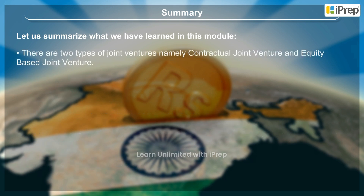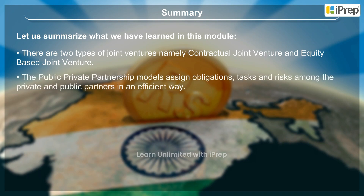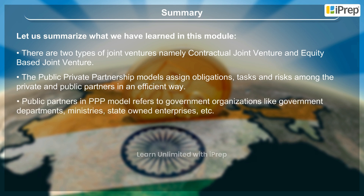The primary reasons for joint ventures are operation expansion, development of new goods, and entering into new markets. There are two types of joint ventures: contractual joint ventures and equity-based joint ventures. The public-private partnership model assigns obligations, tasks, and risks among private and public partners efficiently. Public partners in the PPP model refer to government organizations like government departments, ministries, and state-owned enterprises.